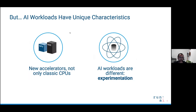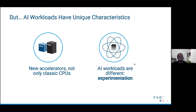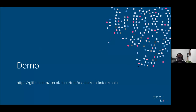AI is a bit different. In terms of accelerators that AI workloads run on, it won't be only classic CPUs. There are new accelerators more suitable for AI workloads, mainly GPUs, maybe also ASICs in the future. Also, the whole development and execution of AI workloads is based on experimentation, which is different from just deploying microservices. So let's go and see a live, real example — we're going to run some workloads today and train a deep learning model on Kubernetes.